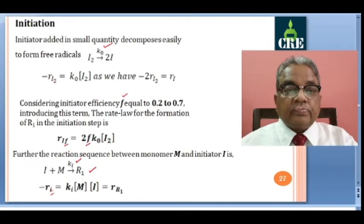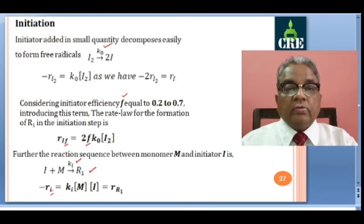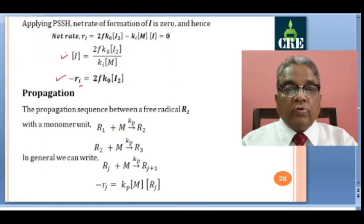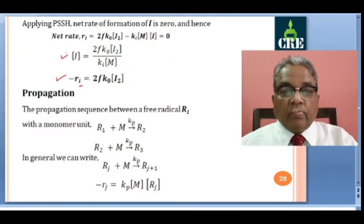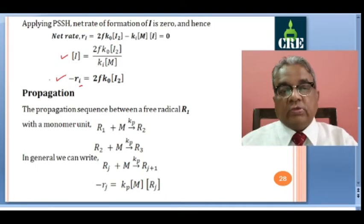Note: do not confuse between minus R capital I (rate of initiation reaction) and minus R small I. The capital R_I notation refers to the initiation reaction, while the earlier minus R_I referred to the dissociation reaction of I2 to 2I.